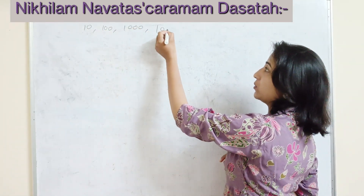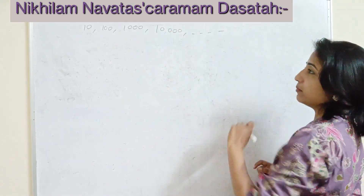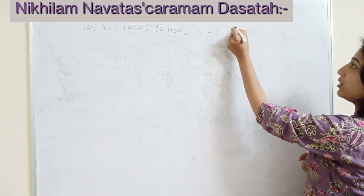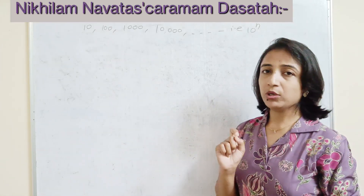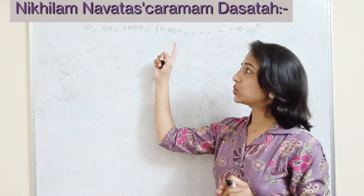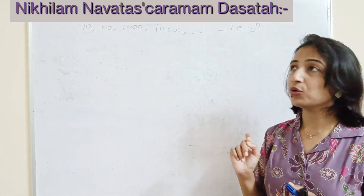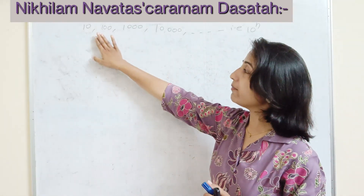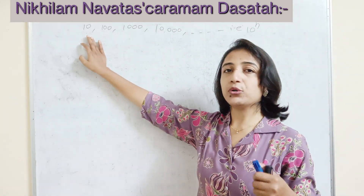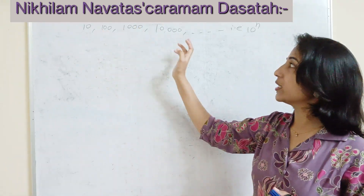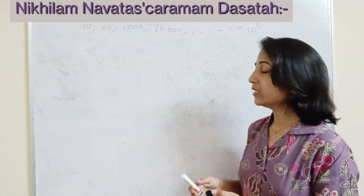We are taking the product of numbers which are nearest to 10, 100, 1000, 10,000, and so on. If two numbers are given and they are nearest to a power of 10, we can use this Nikhilam Sutra to get the answer very quickly. This reference power of 10 is called the base — the base can be 10, 100, 1000, 10,000, or any power of 10.